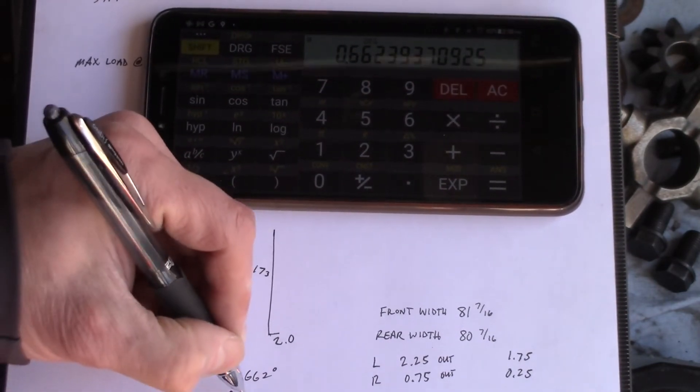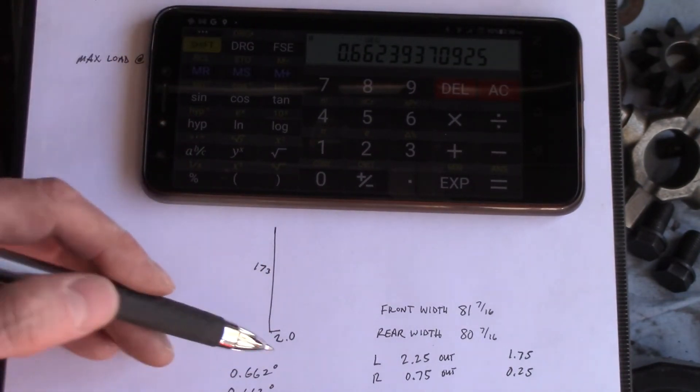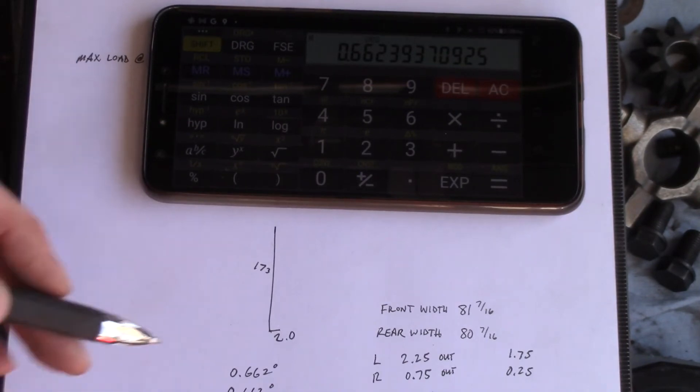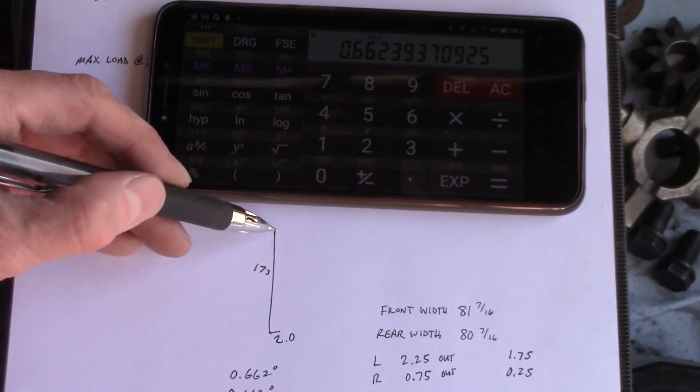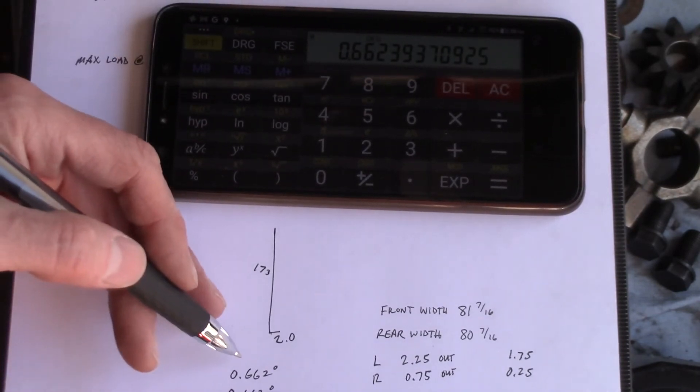So college was right—at small angles, sine and tangent are the same. So 0.662 degrees toe-in is what we got. That's the total toe-in angle. To get it for each wheel, just divide by two, so basically each wheel is about 0.33 degrees toed in.